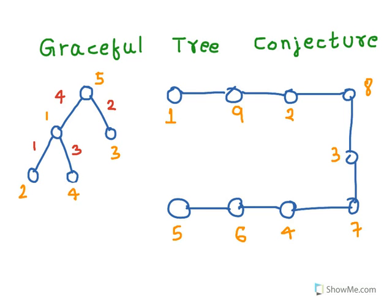Now if we look at the corresponding edge labels, they are as follows. Notice that all the edge labels are unique, so the vertex labeling which we started with is a graceful labeling.